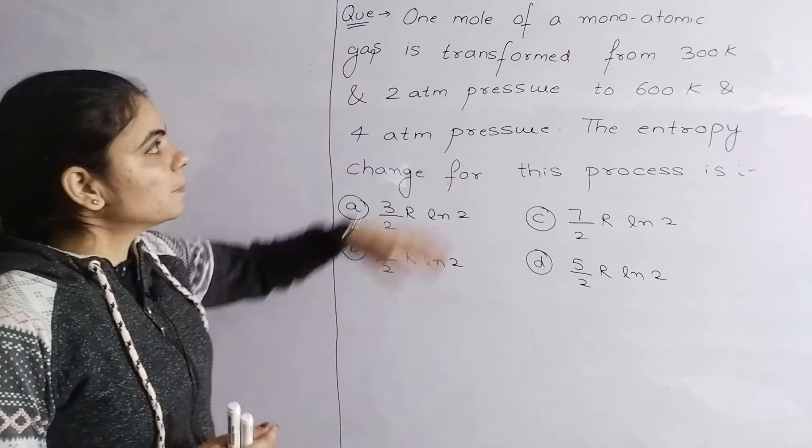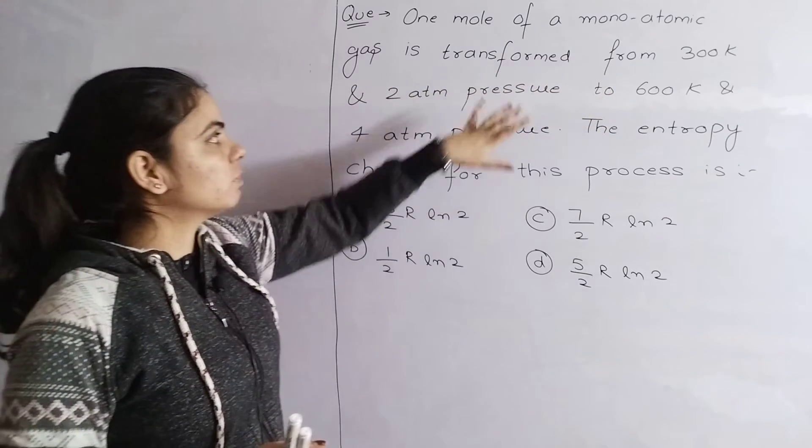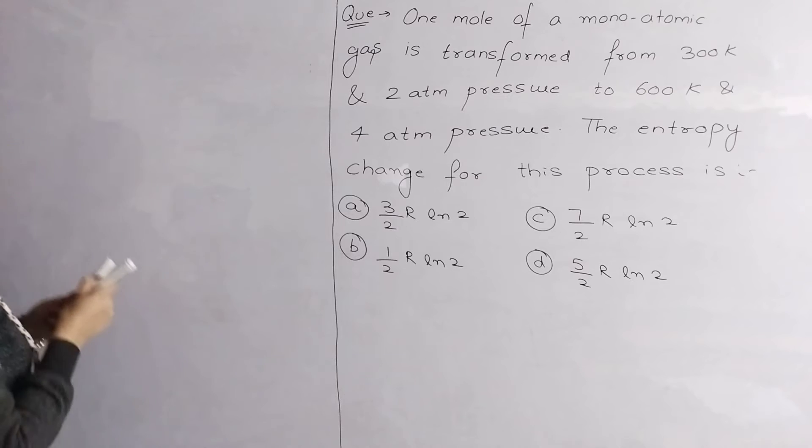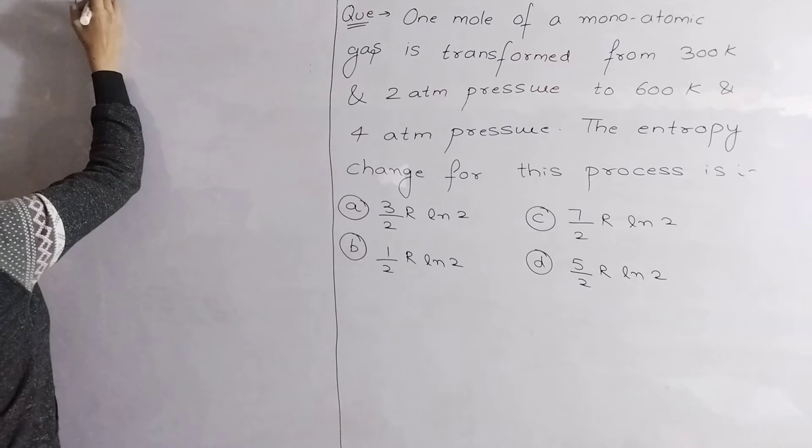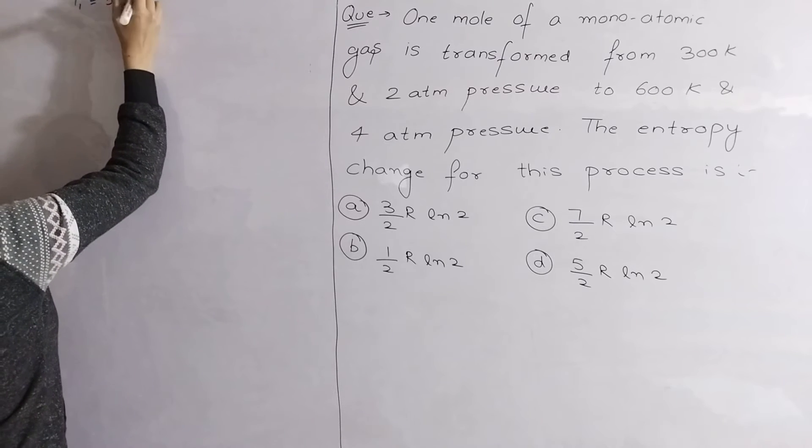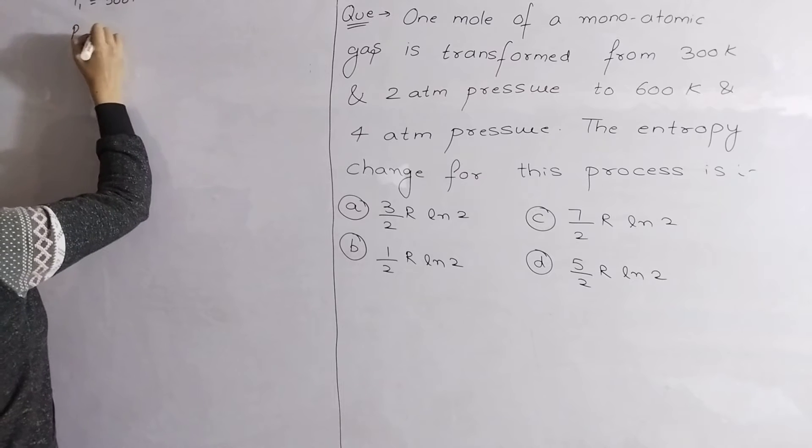This type of gas is transformed from 300 Kelvin and 2 atmosphere pressure. So starting temperature given is 300 Kelvin and pressure given is 2 atmosphere.